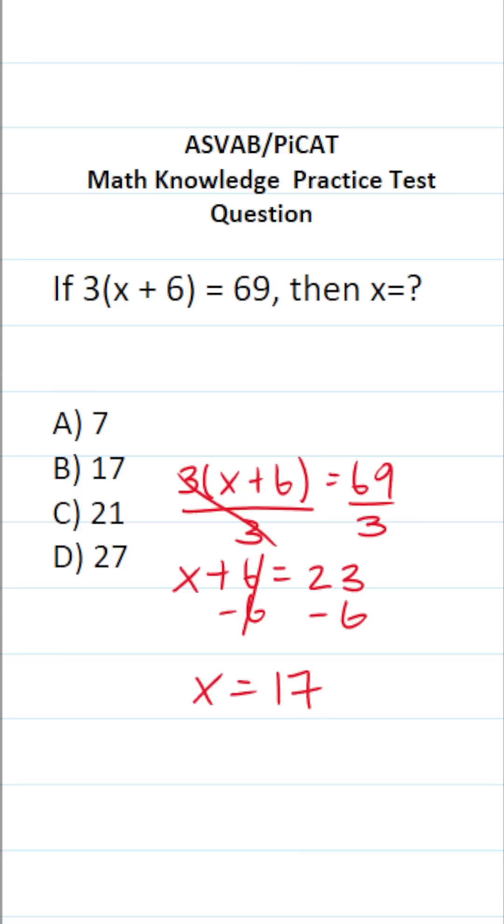Now, on test day, if you're nervous and you can't do 23 minus 6 mentally, I'd encourage you to do it on the scratch paper you'll be given. 3 minus 6, we can't do, so we have to borrow. This becomes 1, this becomes 13. 13 minus 6 is 7, 1 minus nothing is 1. So that's how we got 17.